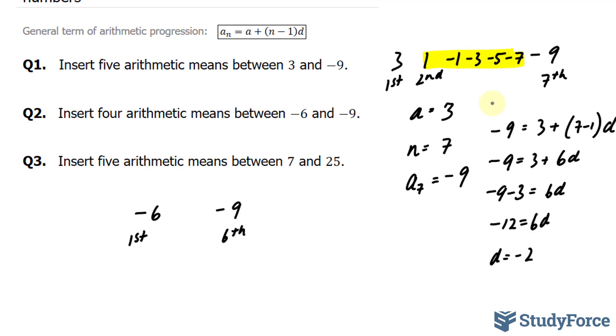We'll do the exact same mathematics as before. Our first number is negative 6, n will be 6, and a at 6 is equal to negative 9.